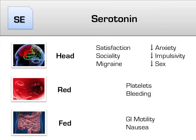The next neurotransmitter we will talk about is serotonin. Serotonin is a complex molecule because it has so many roles in your body. The way that helps me to remember them is to think of the rhyme: head, red, and fed. Head reminds you that serotonin is an abundant neurotransmitter in the brain and is linked to, among other things, depression, anxiety, social interaction, impulsivity, sex drive, and migraines. Red should remind you of blood — specifically that serotonin affects platelet binding and adhesion, so interfering with platelet function can cause problems with bleeding. Finally, fed: 90% of all serotonin in the body is in your GI tract. Serotonin seems to drive both GI motility as well as nausea, which explains why a drug like Zofran, which blocks serotonin, is so effective at preventing nausea.